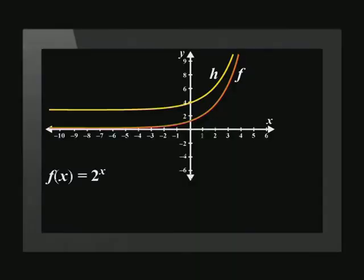Now on the same system of axes, let's shift the graph up 3 units. We will call it h of x. The equation of the translated graph is h of x equals 2 to the power of x plus 3.